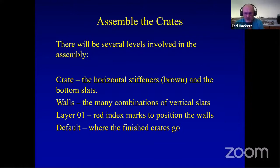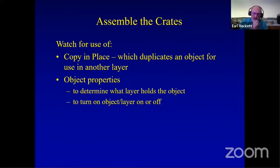Close it up like that. And now we're going to assemble the crates. Now, one of the things I have, I'm using four levels here. The crate, the brown stiffeners and the bottom slats, that's on one layer. The walls are the combination of the vertical slats. I have a little layer 01, which is red index marks that help me position the walls. And the default layer is where the finished crates are going to go. There are a couple of things you want to watch here. One is what's called copy in place. It duplicates an object for use in another layer. In other words, you bring the layer up, you expose it, say copy in place, then you make it go away again. So now you have a copy of that object in exactly the same spot every time. And you also use the object properties, which determines what layer the things are on, and turn layers on and off.